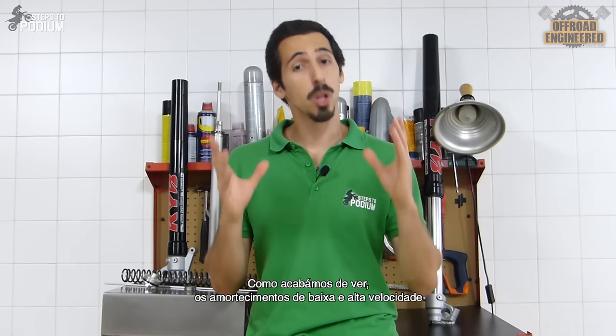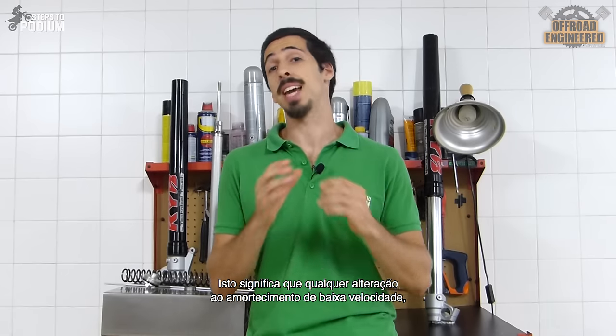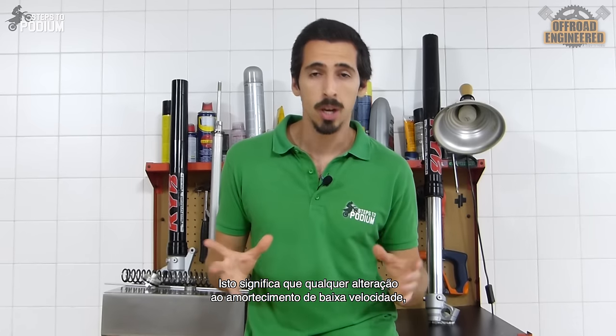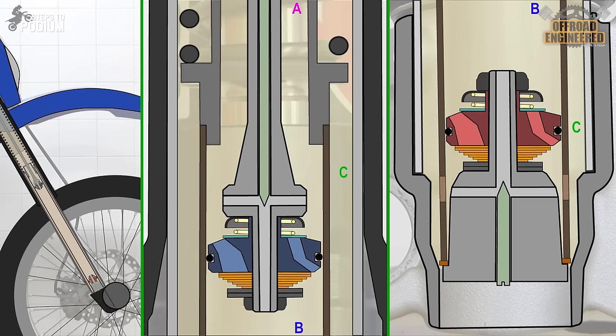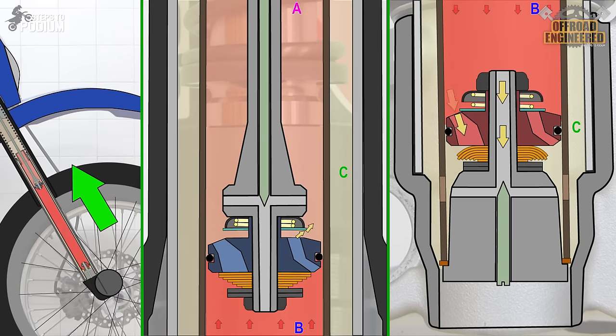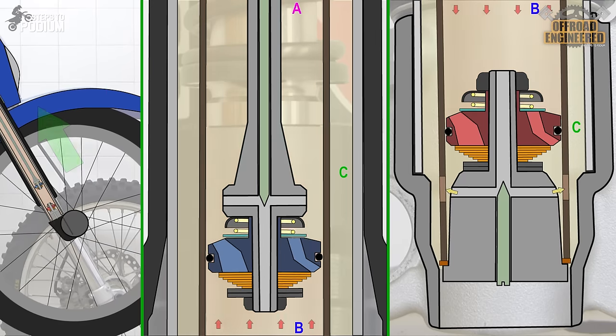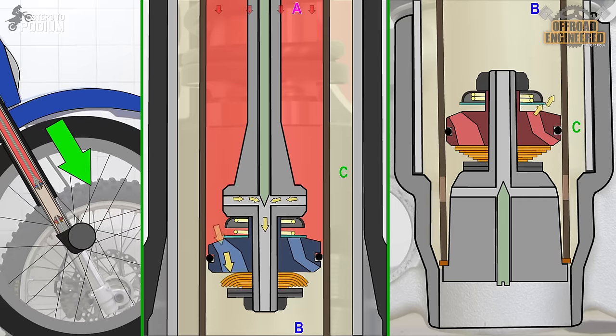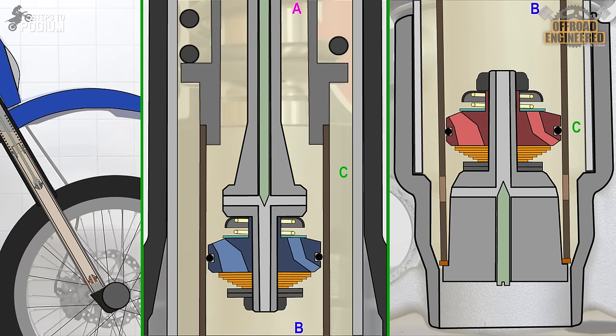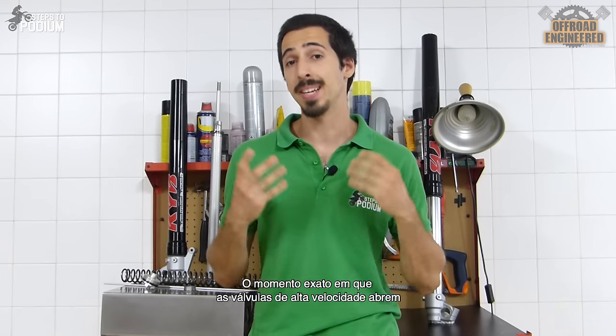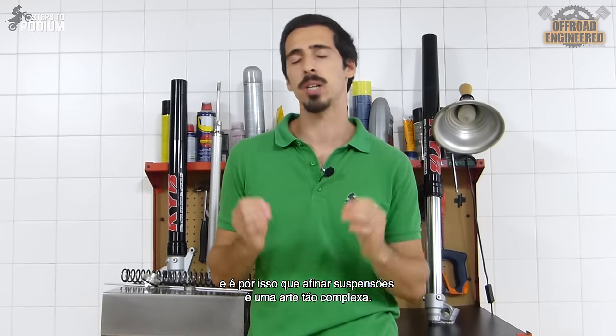As you can see, both low-speed and high-speed damping take place at the same time. This means that any change on the low-speed damping will affect the performance of the forks during high-speed damping. The precise moment when the high-speed damping valves open can be completely tunable, and that's why it's such a complex art.